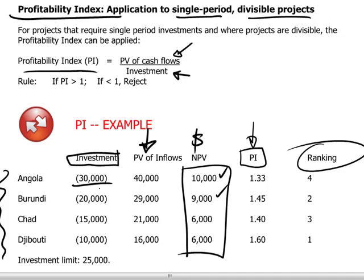The $30,000 investment gives rise to inflows of $40,000. Therefore our definition of profitability — the PI — is going to be 1.33. Can we do better than that? Let's look at the other projects.